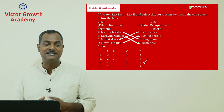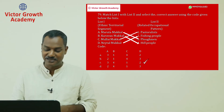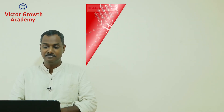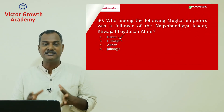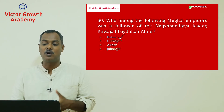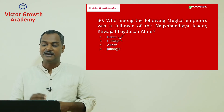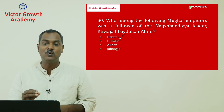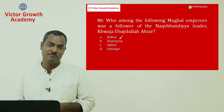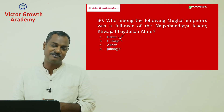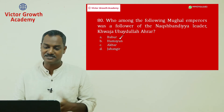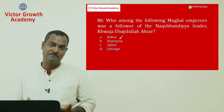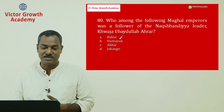Question 79 answer is C. Question number 80: which Mughal emperor was a follower of Naqshbandiya leader Khwaja Ubaidullah Ahrar? Options are Babur, Humayun, Akbar, and Jahangir. The answer is Babur — A. Question 80 answer is A.